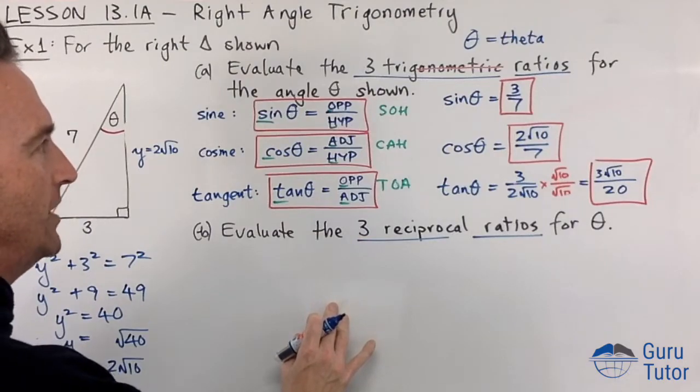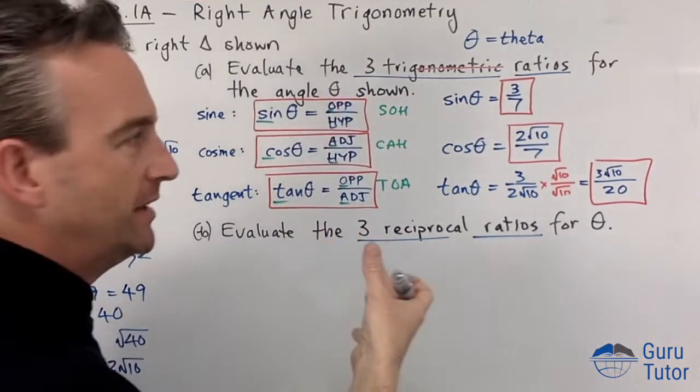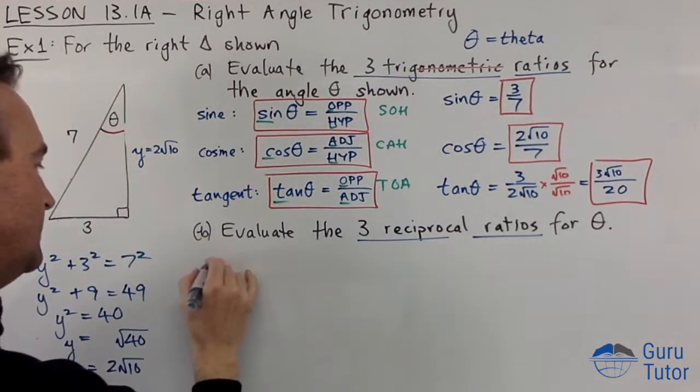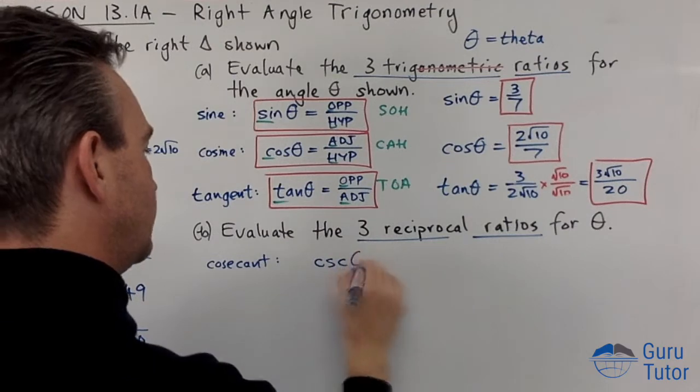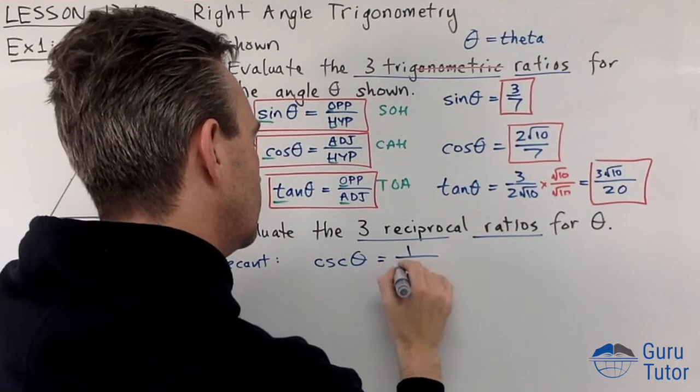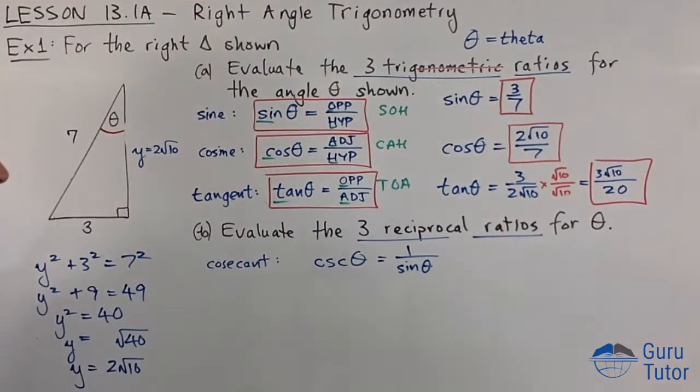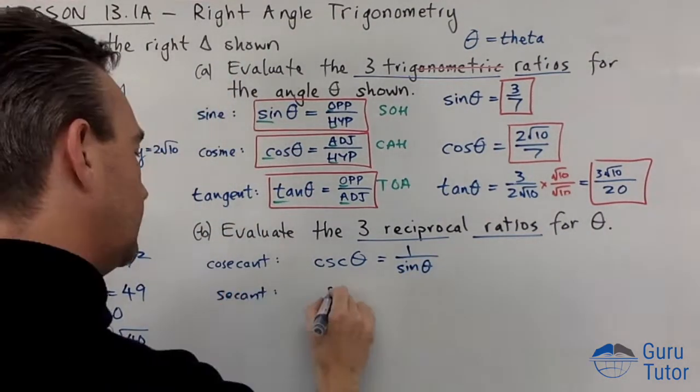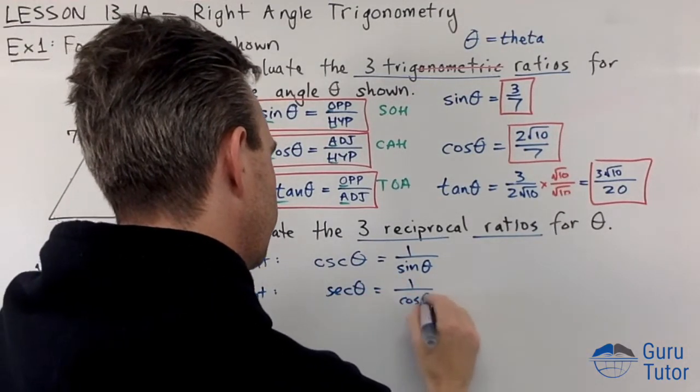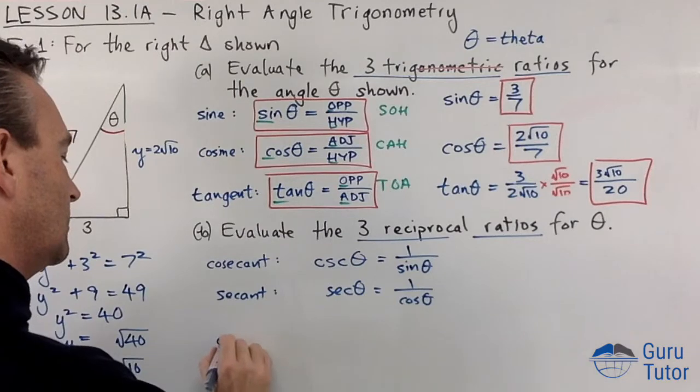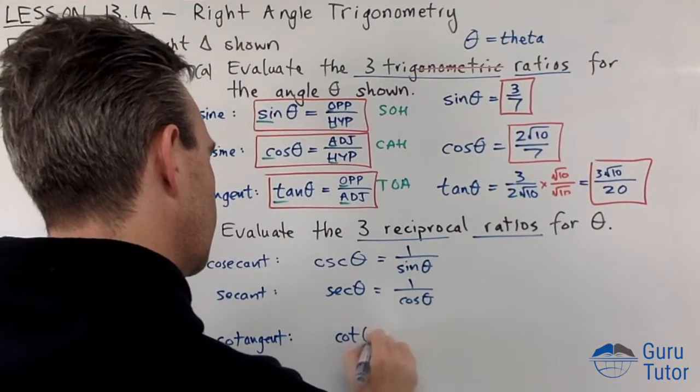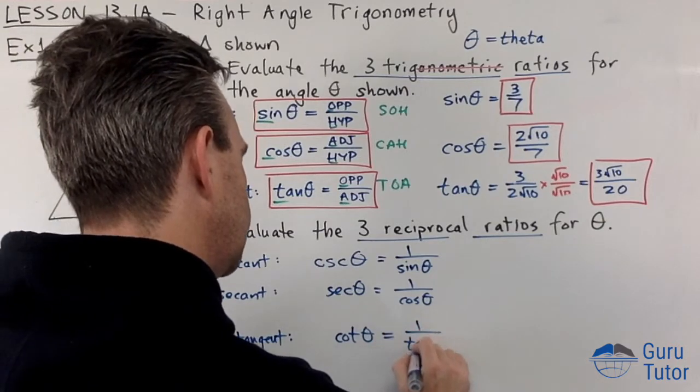What are these? These are reciprocal ratios. These are three more of these that are upside down. The reciprocal ratios are cosecant, which is CSC theta, and CSC theta is simply 1 over sine theta. We also have secant theta, SEC theta, which is 1 over cos theta, and then we also have cotangent theta. Cotangent is just cot theta, and that is 1 over tan theta.